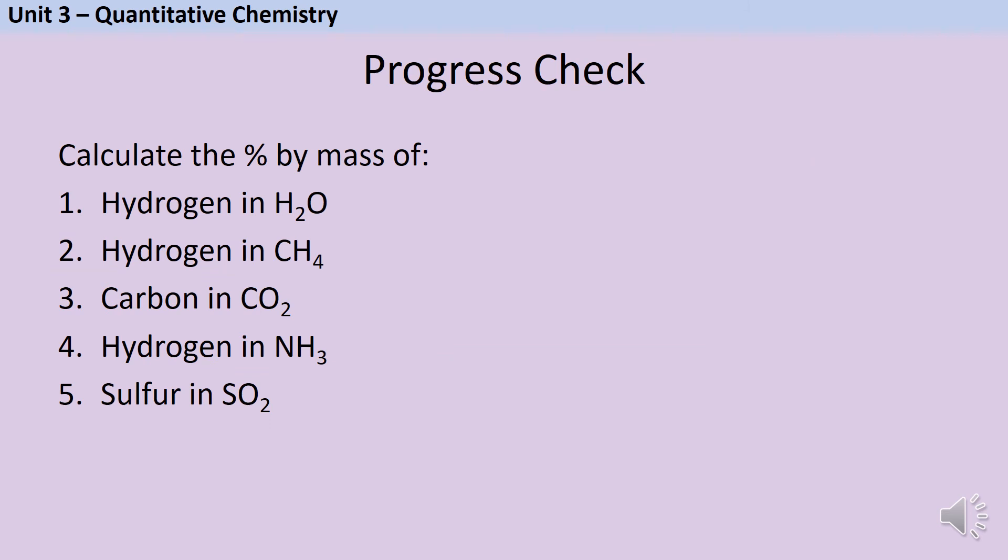Here are five more questions for you to have a go at to check you've got the hang of it. Remember when you calculate the mass of the element you need to take into account the number of atoms. Don't just use the relative atomic mass, so if there are seven atoms of the element you're looking at you need to multiply the relative atomic mass by seven. Pause the video and when you're ready to check your answers press play again.